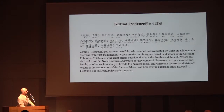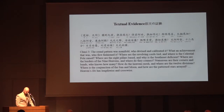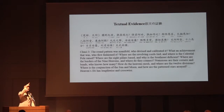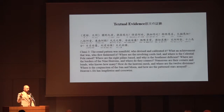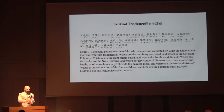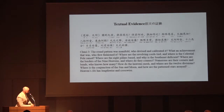'The round pattern was manifold — who devised and calibrated it? What an achievement! Who most fashioned it? Where are the revolving cords tied?' The revolving cords are the R-sheng — two cords going north-south and east-west, horse to rat, rabbit to rooster. That's like the cords of heaven — the way we divide the heavens. It's also what we do on our Lo-han: we put two cords on a Lo-han, representing the R-sheng, the cords of heaven. 'Where is the celestial pole raised?' — the pole star — which in this case is in the middle of the Shurpan.